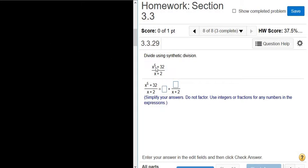Divide using synthetic division. So we have x to the fifth plus 32 over x plus 2.